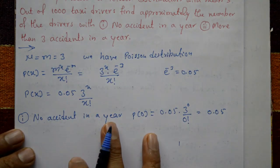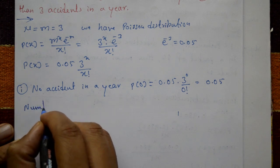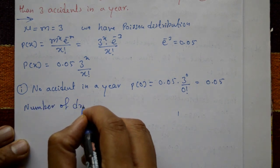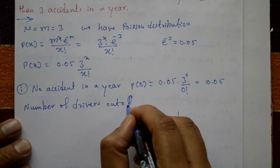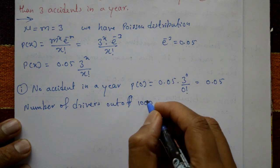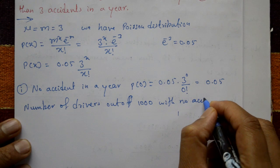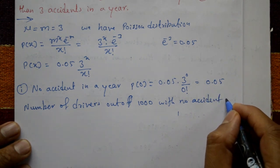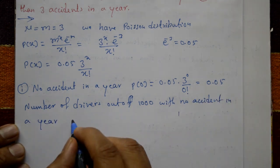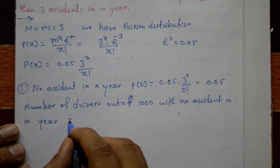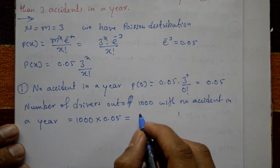Out of one thousand taxi drivers, the number of drivers with no accident in a year equals one thousand multiplied by P(0), which is one thousand multiplied by 0.05, giving 50 drivers.